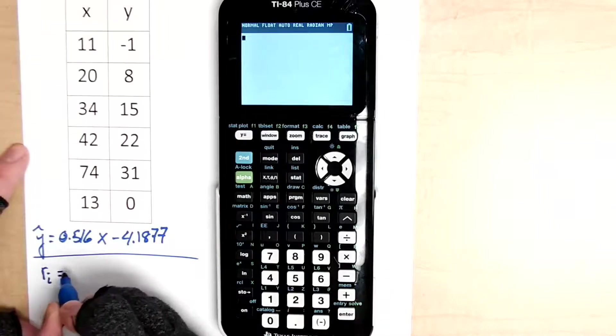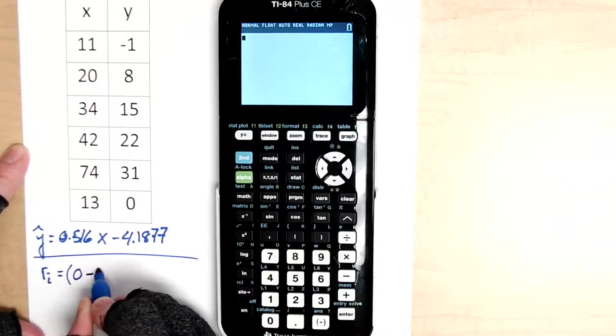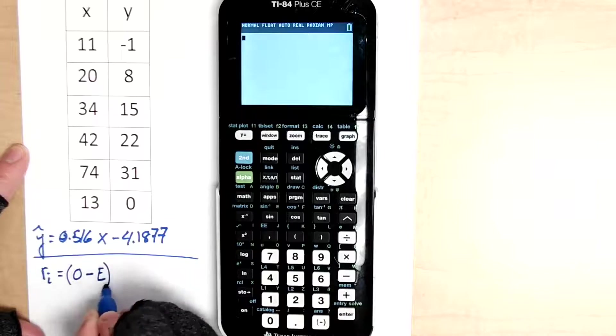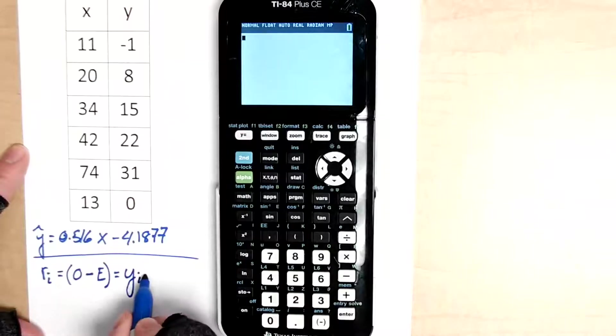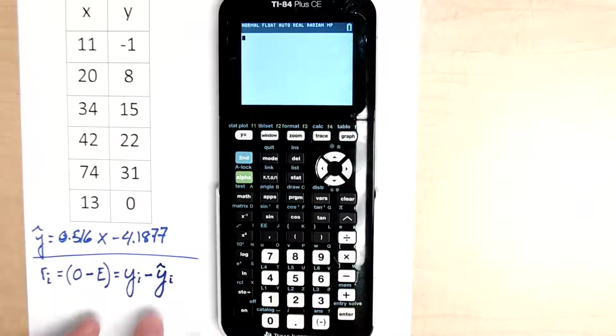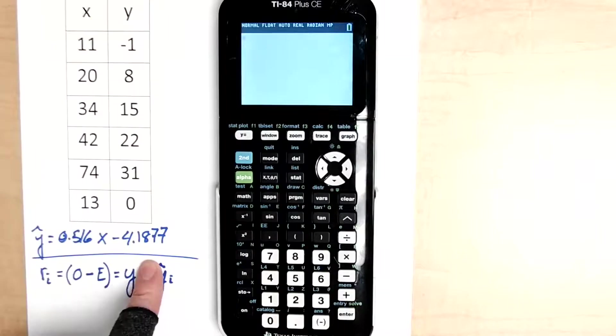And the way that we calculate this is the observed y value minus the expected y value. So notationally, that's each little value of y that I found for every x minus its respective y hats. And these sub i's are just to note that we're going to do this for every single point. So for every single y value I have, even if I had repeat ones,